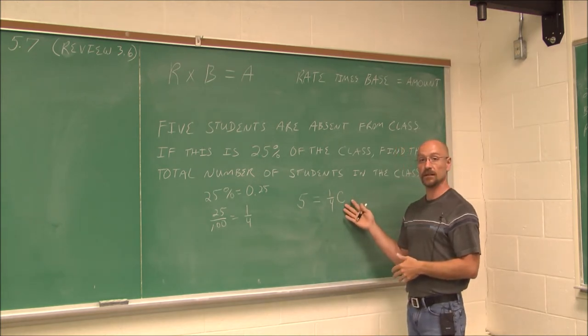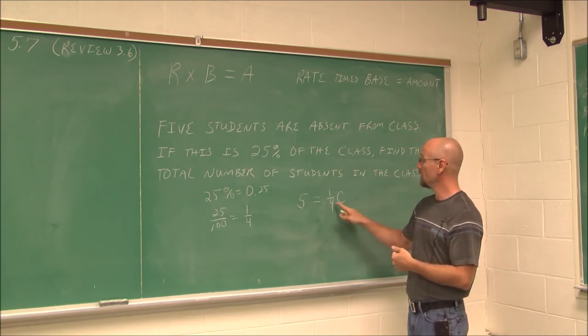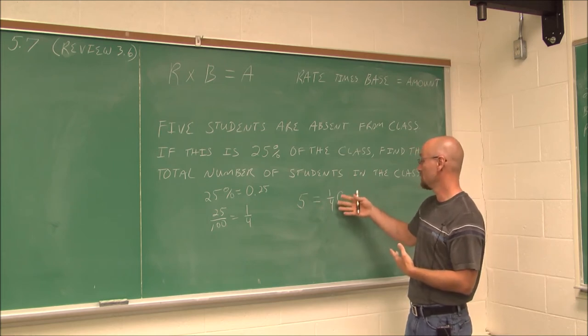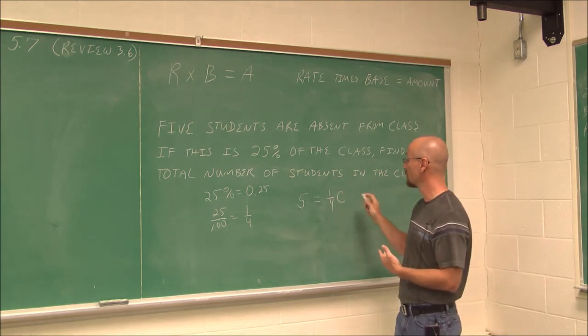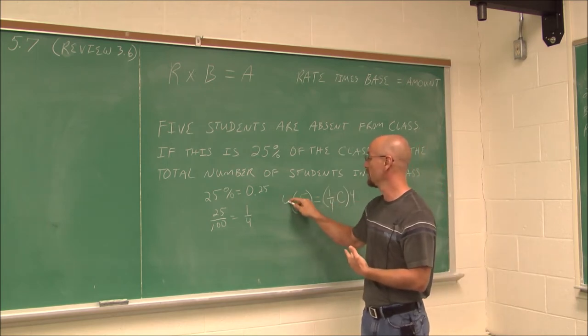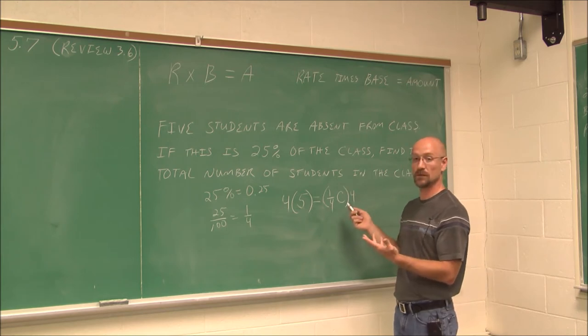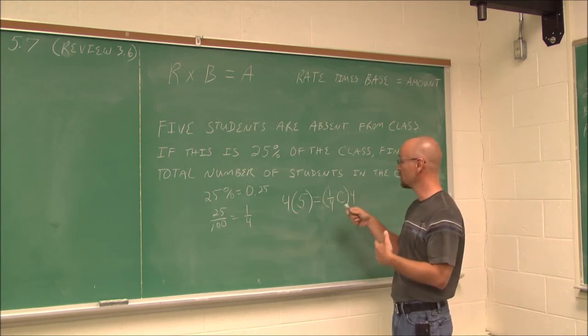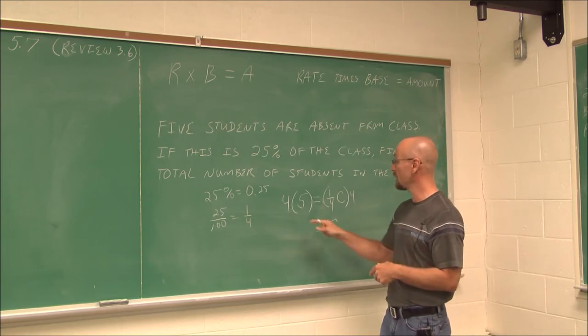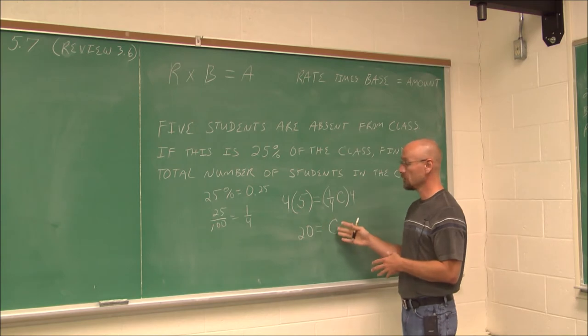We just translated this into an algebraic expression. And now we can solve it. To get rid of this fraction, I can multiply by its reciprocal. Its reciprocal of 1 fourth is 4. So if I multiply this by 4, I can multiply this by 4. 4 times 1 fourth is just 1. The 4's would reduce to 1. One of these C's, or the number of students in the class, is 4 times 5, which is 20. 20 students.